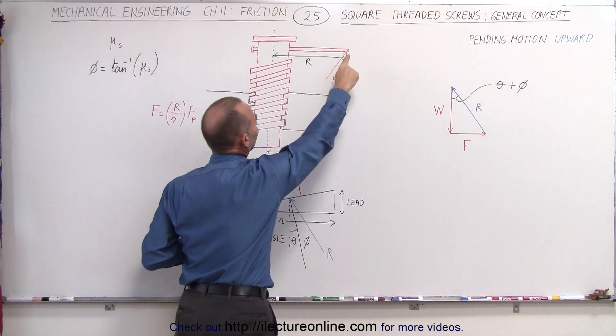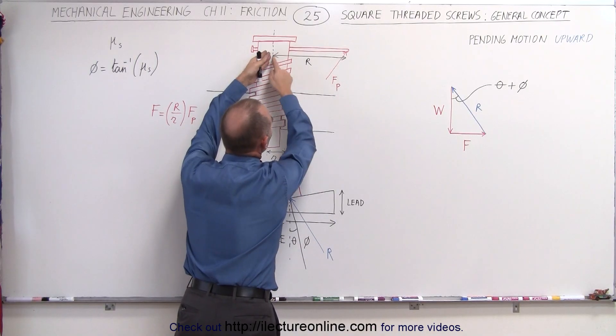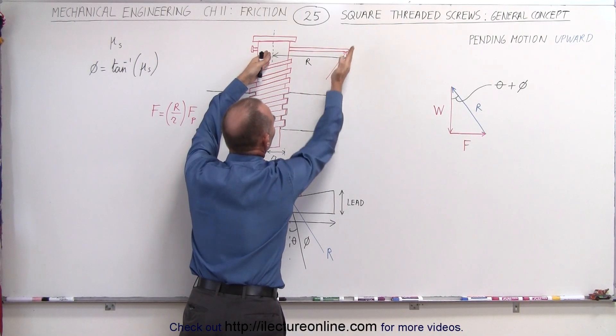We're going to push against it like here at the edge of the angle at a distance r away from the center of the screw. So this is the moment arm, this is the force applied, fp.